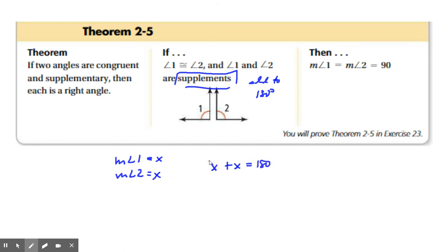Well, let's combine our like terms. This is 1x and 1x. 1x and 1x makes 2x. And let's divide by 2. And what do we get? x is 90. That means the measure of angle 1 and the measure of angle 2 are 90 degrees. And if they're each 90 degrees, then that means they are each right angles.